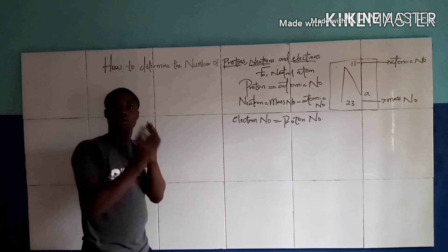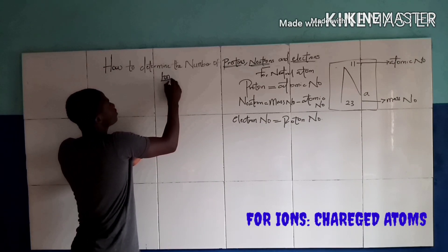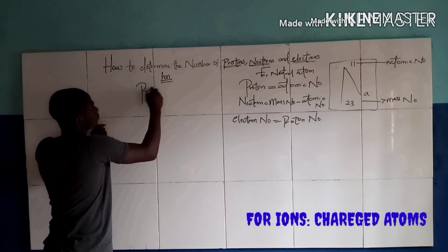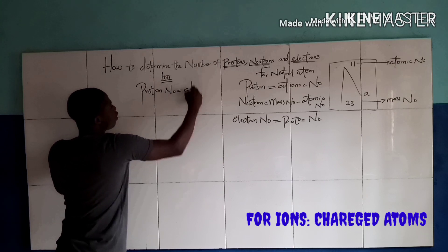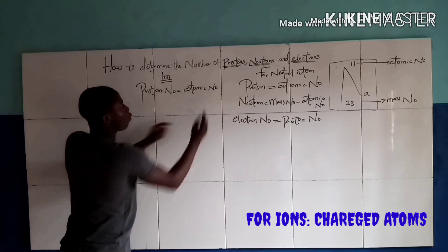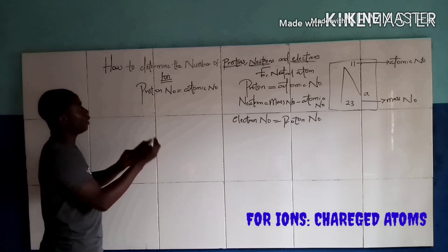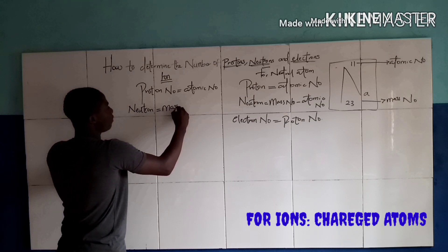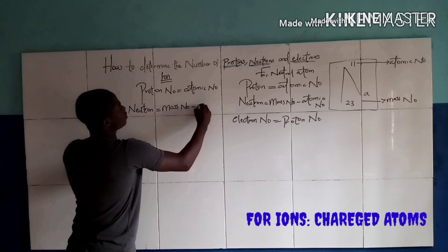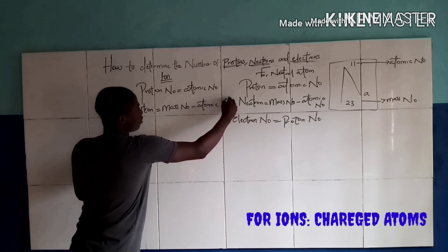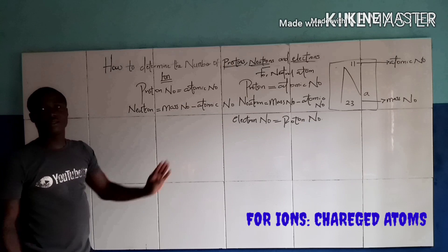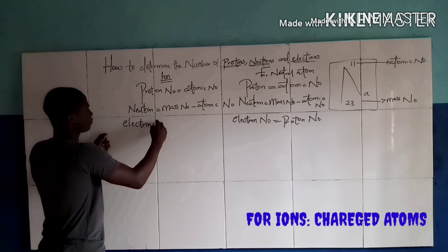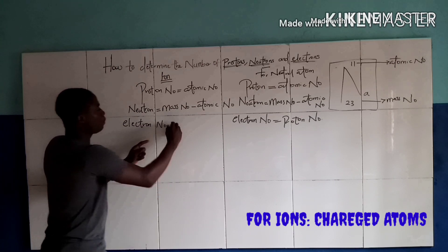Now, if this atom has a charge, it is called an ion. For an ion, the proton number is the same as the atomic number. The neutron number is still obtained the same way as for a neutral atom — by the mass number minus the atomic number. But the only difference is the electron number: for an ion, the electron number equals the proton number minus the charge.